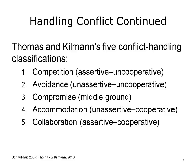Thomas and Kilman's five conflict-handling classifications are: Competition, or a competing style, which is assertive and uncooperative; Avoidance, which is unassertive and uncooperative; Compromise, which represents the middle ground; Accommodation, which is unassertive and cooperative; and Collaboration, which is both assertive and cooperative. On the next few slides, we look at what each of these conflict-handling classifications means.